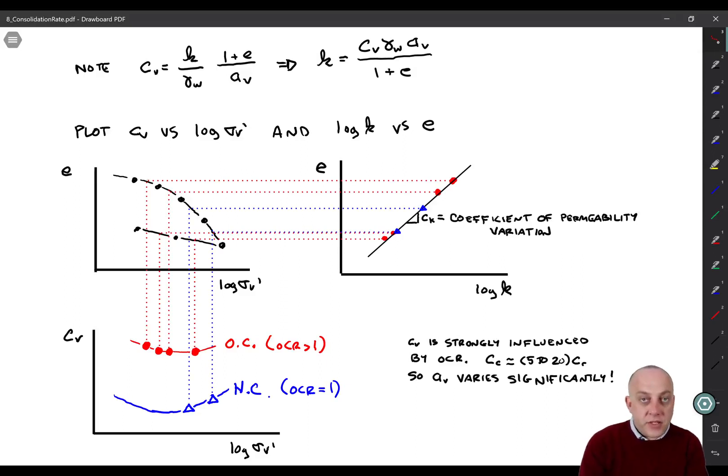And what you'll find, if you don't separate them or plot different symbols for overconsolidated and normally consolidated, you won't really see a trend. It's not going to make a lot of sense to you. If you do separate these out, you'll clearly see that there are two different trends. One for the normally consolidated soil that's lower, the one for the overconsolidated soil that's higher. The reason for that is that C sub V is strongly influenced by the overconsolidation ratio. So C sub C is about 5 to 20 times C sub R. A sub V varies a lot. C sub V is linearly inversely proportional to A sub V. Therefore, we get different relationships for overconsolidated and normally consolidated. Then we look at E versus log K, and we have basically a linear relationship here. All of the points, it doesn't really matter if you're overconsolidated or normally consolidated. Then you can fit a line through that, and the slope of that line is C sub K, the coefficient of permeability variation.